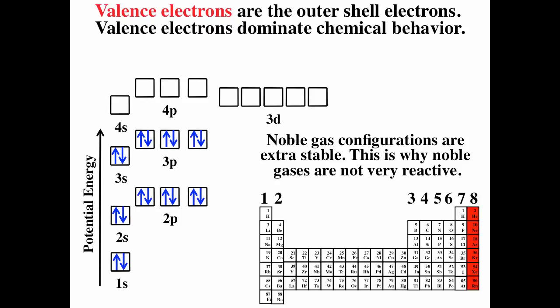Howdy, and so what have you learned? We've learned that valence electrons are the outer shell electrons that dominate chemical behavior. We've learned that elements down a column have the same valence electron configuration, and hence have the same number of valence electrons. Alkaline metals have one valence electron, alkaline earth two, noble gases have eight except for helium with two, halogens have seven, and chalcogens have six.